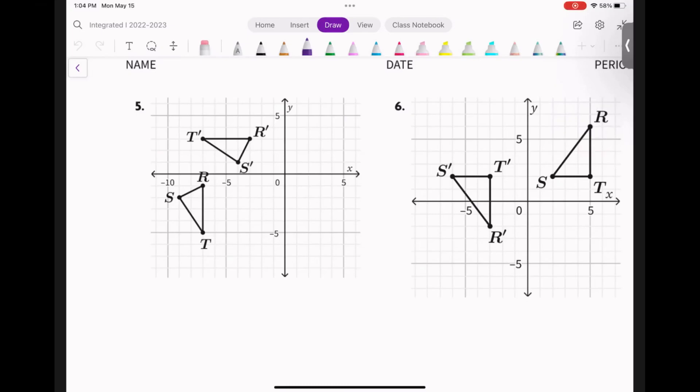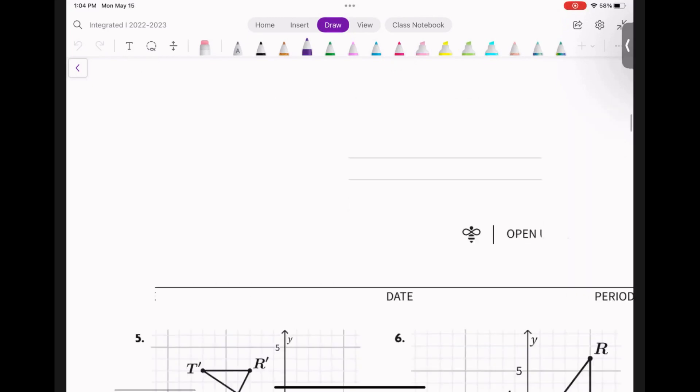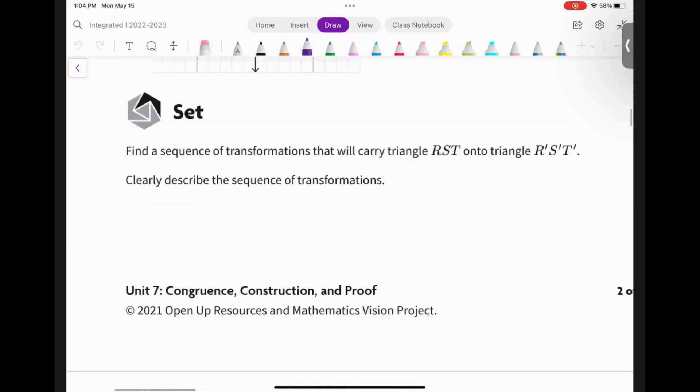Okay, welcome back to our channel. We're going to do problem 7.3 Ready Set Go number five. It's asking us to find a sequence of transformations that will carry triangle RST onto R prime S prime T prime.